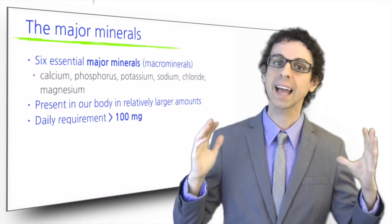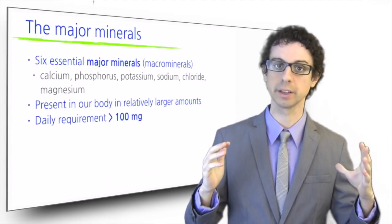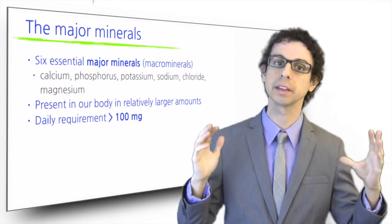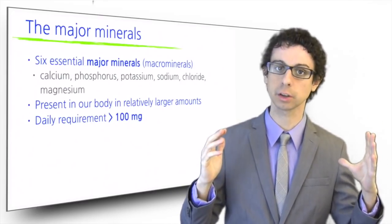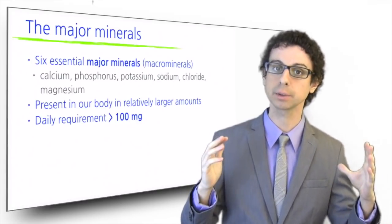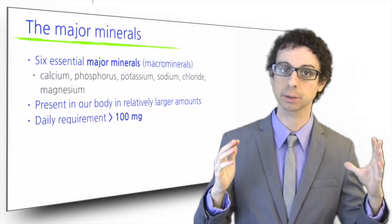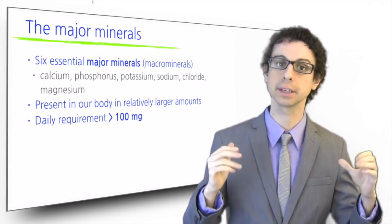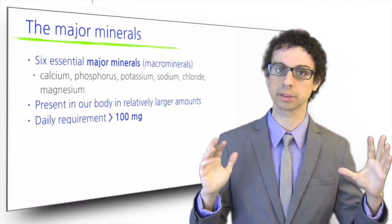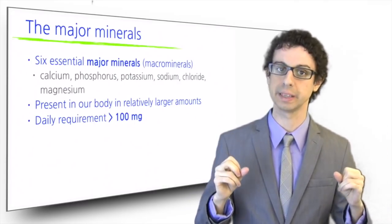Calcium is the most abundant mineral in our body. We have about 1200 grams, mostly in our bones. We have about half as much phosphorus, also largely in our bones, and then about 200 grams of potassium, 100 grams of sodium and chloride, and 30 grams of magnesium. Our daily requirements for all these minerals is greater than 100 milligrams.